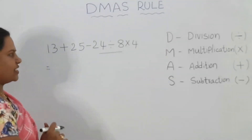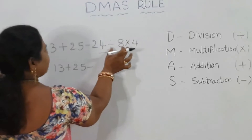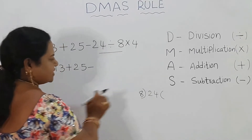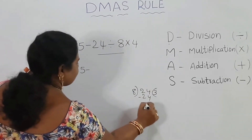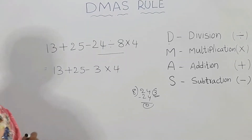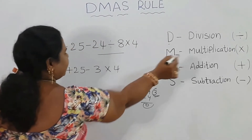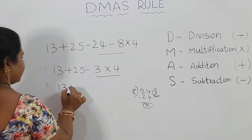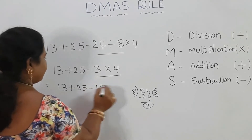24 divided by 8 — how many times is 24 divisible by 8? 8 times 3 is 24, so the answer is 3. Write 3 here, and 3 into 4. Next, multiplication: 3 into 4 is 12. So we have 13 plus 25 minus 12.